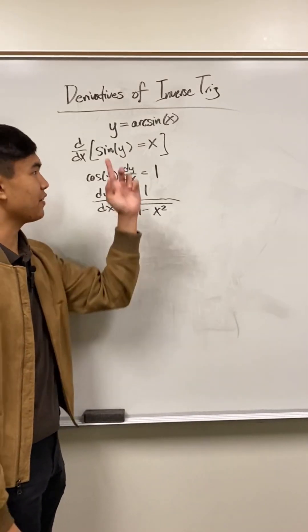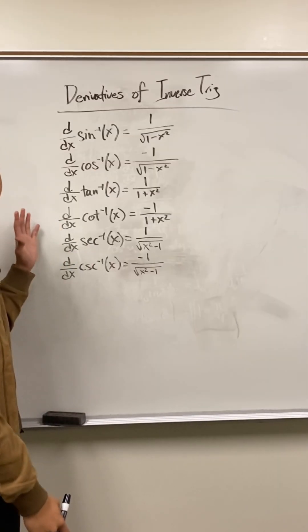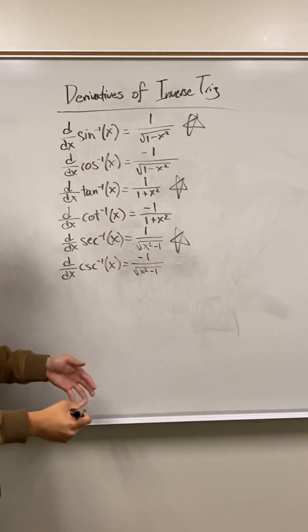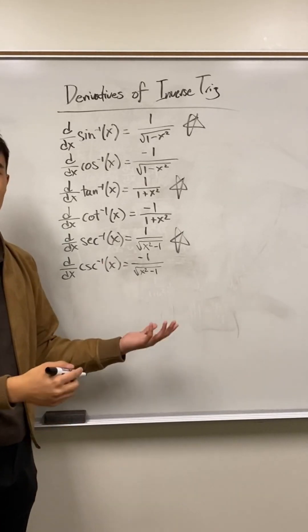And every other inverse trig derivative is found in a similar way. Here are the derivatives of all six. In reality, you only have to memorize three. That's because for sine, tangent, and secant, the derivative of their co-counterpart is just a negative derivative of itself.